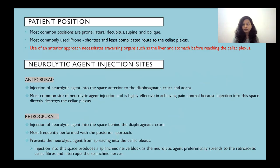The patient position is variable — prone, lateral decubitus, supine, or oblique. The most commonly used position is prone since it is the shortest and least complicated route to the celiac plexus. Use of an anterior approach necessitates traversing organs such as the liver and stomach. Neurolytic injection sites: the anticrural site is the space anterior to the diaphragmatic crura and aorta, and is most common and highly effective as it directly destroys the celiac plexus. The retrocrural site is injected into the space behind the diaphragmatic crura, most performed with the posterior approach, but it may prevent the neurolytic agent from spreading into the celiac plexus.